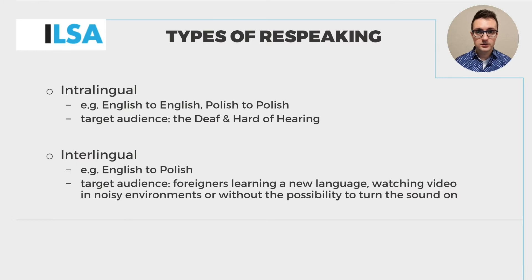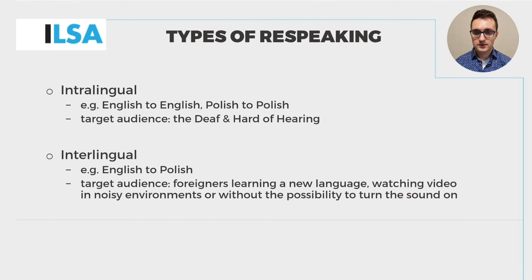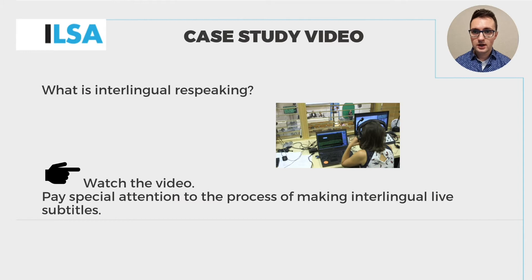Interlingual re-speaking in turn is done between different languages — for example from English into Polish or from Spanish into English. The users of this type of re-speaking may include foreigners learning a new language, or those who watch video in noisy environments, at a bar, railway station or a fitness centre, or in any context when you can't turn the sound on. In this module, we've prepared a number of videos, including a case study video on interlingual re-speaking. You will have a chance to watch this video later on.